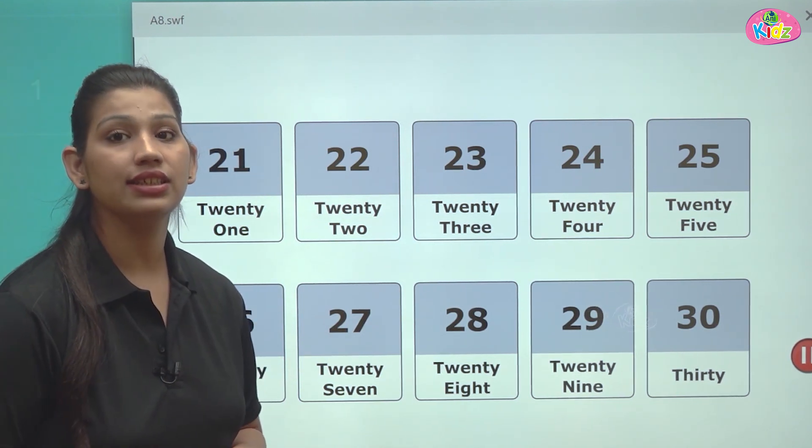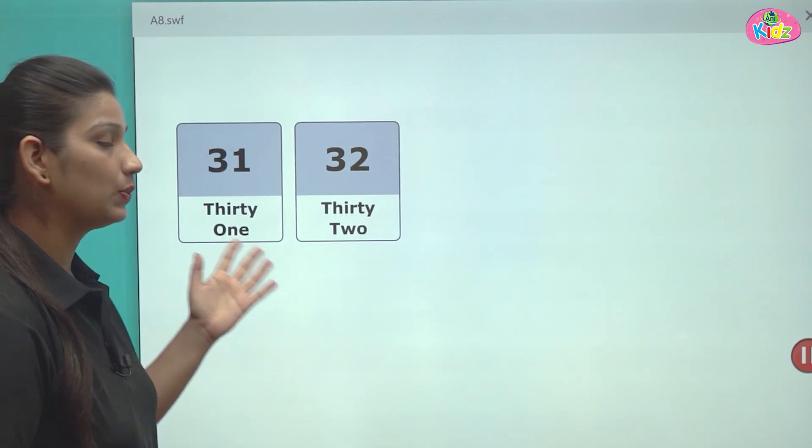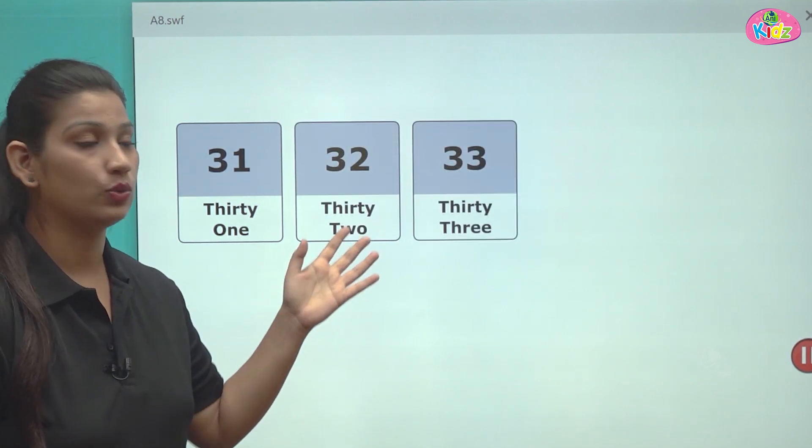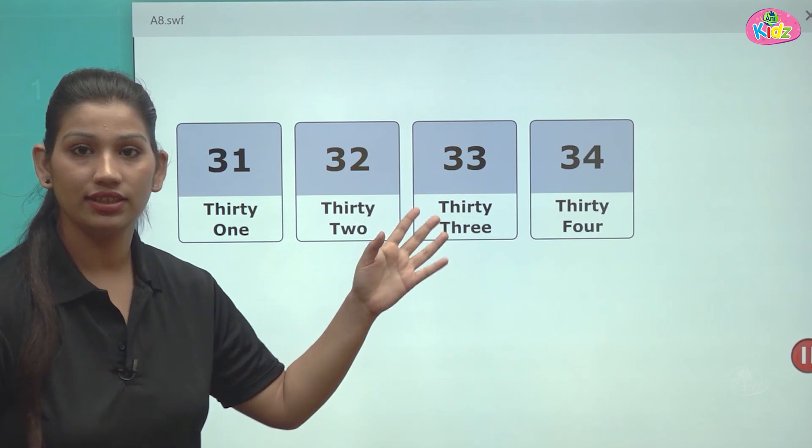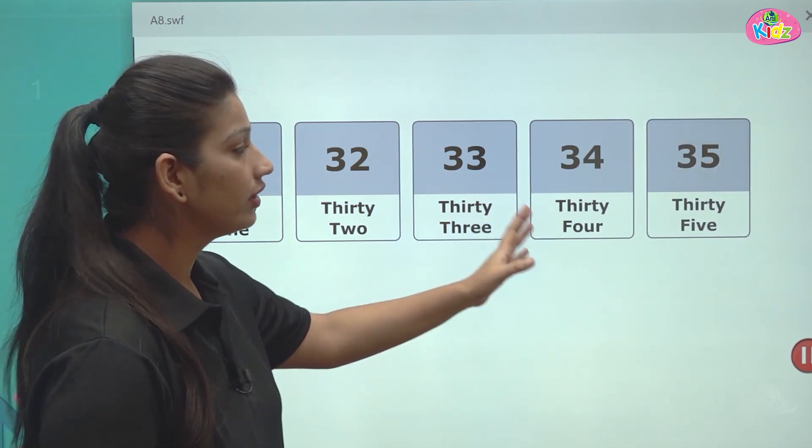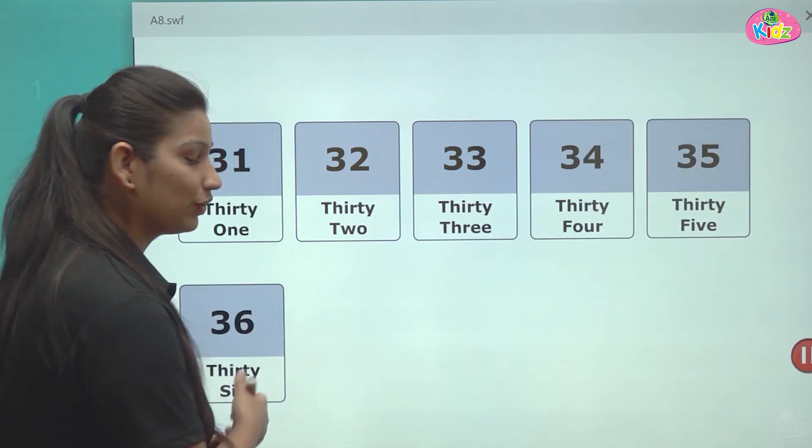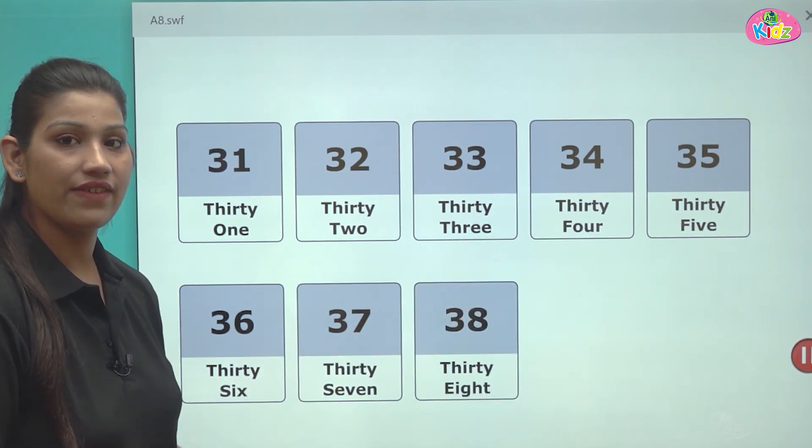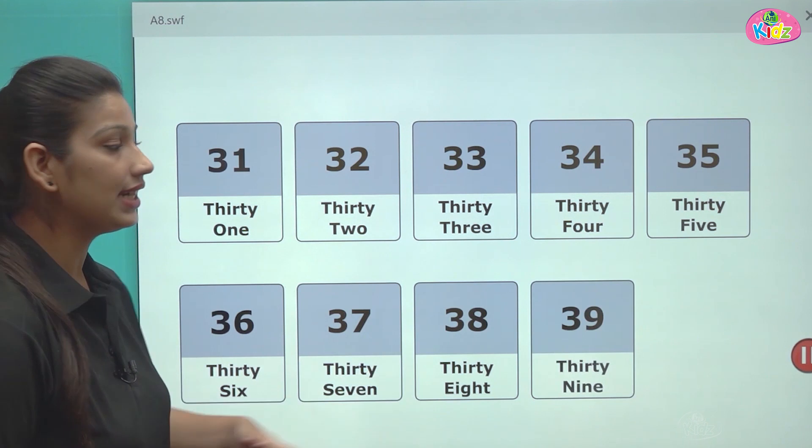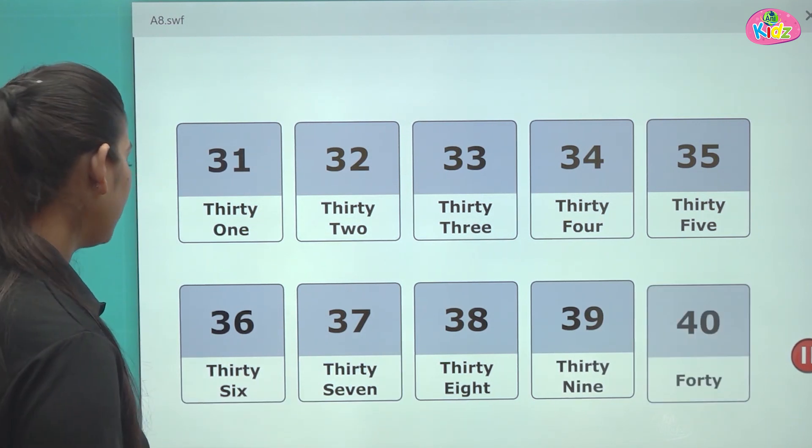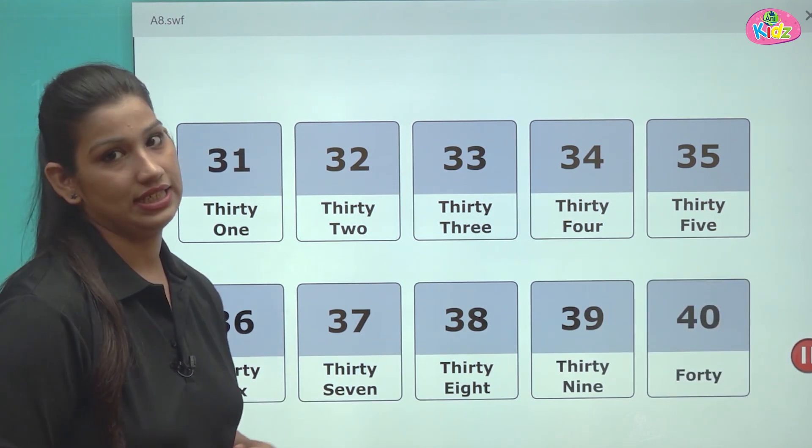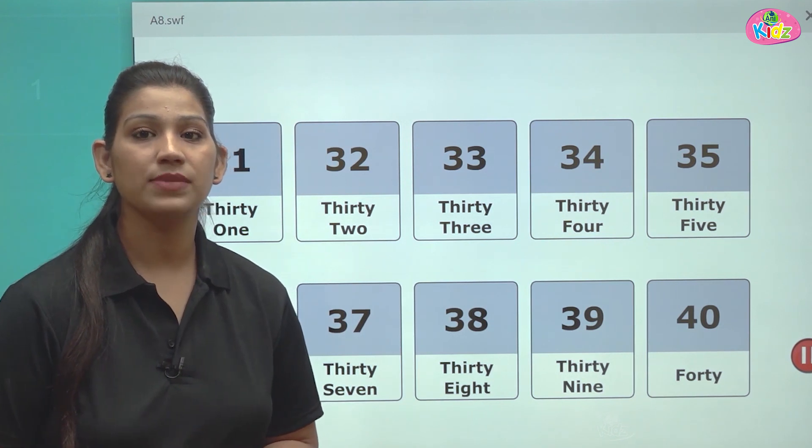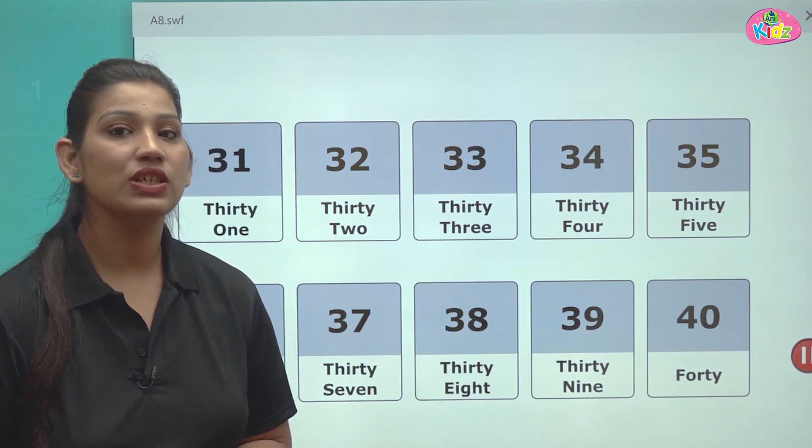Let's see how. After 30, there comes number 31, 32, 33, 34, 35, 36, 37, 38, 39, 40. After 39, there comes number 40.